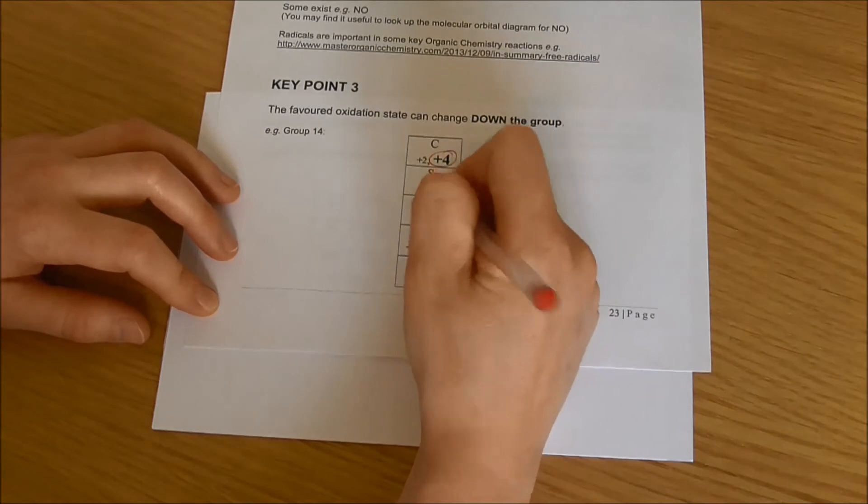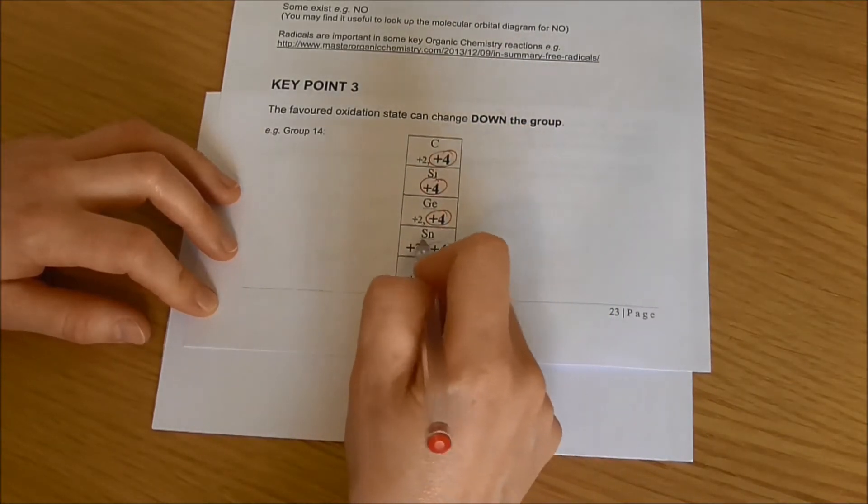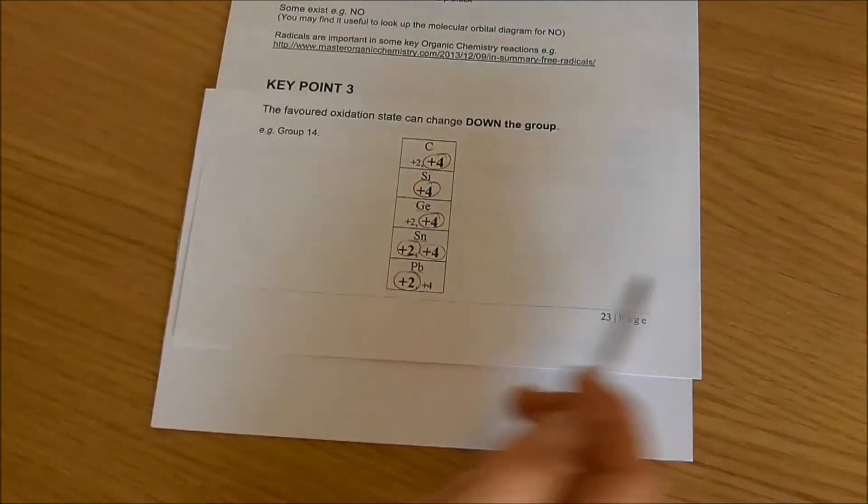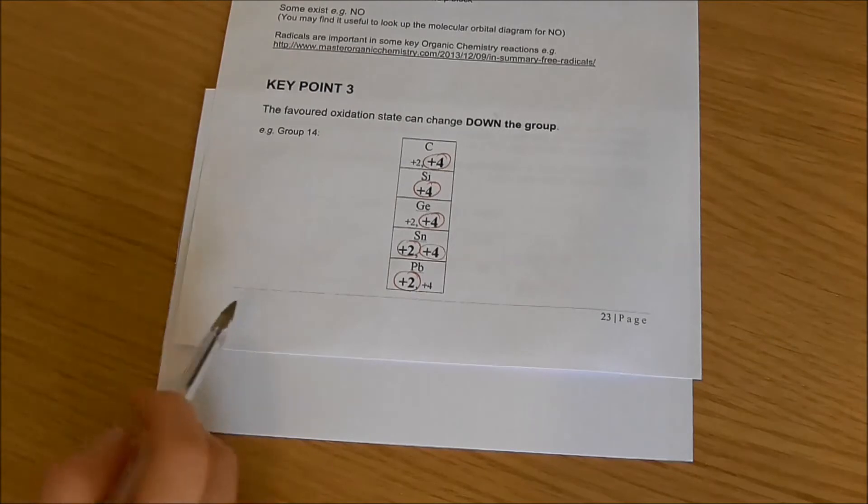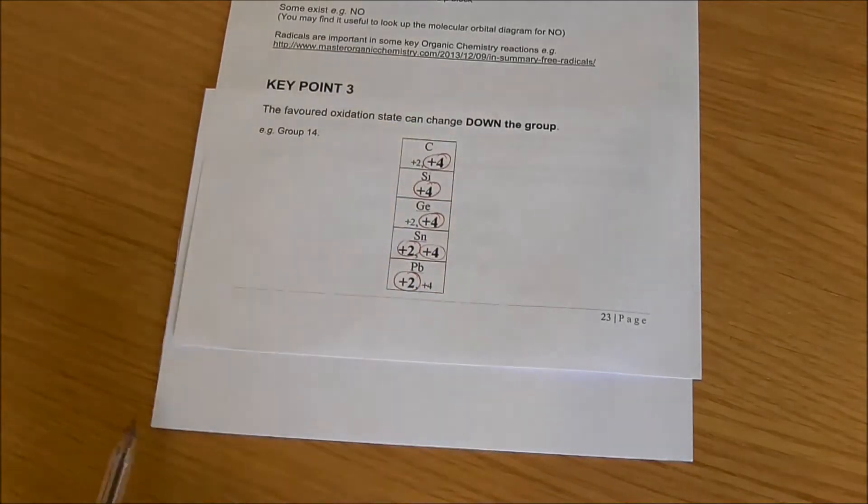We've got plus 4 for carbon, silicon, and germanium. Tin is quite happy as plus 2 or plus 4, but then lead favors the plus 2 oxidation state. We can see this as well if we look at groups 13 and 15. The bottom element in the group tends to favor the lower of the two oxidation states.